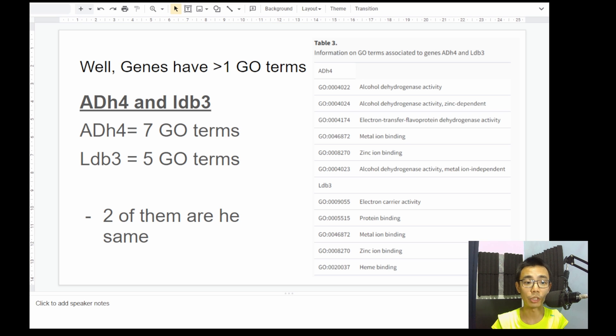For example, alcohol dehydrogenase, zinc ion binding, and metal ion dependent alcohol dehydrogenase. While LDB3 has five GO terms, which is like electron carrier, protein binding, zinc ion binding, and heme binding. So in this case, only two of them are similar, are the same. So in this case, the metal ion binding and the zinc ion binding. So we know that they are both ion binding protein, but the way that they do things are slightly different.